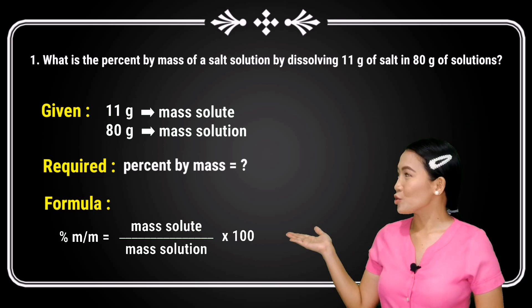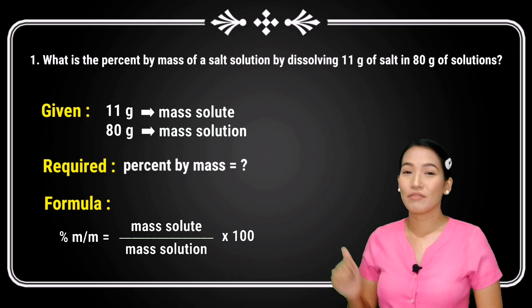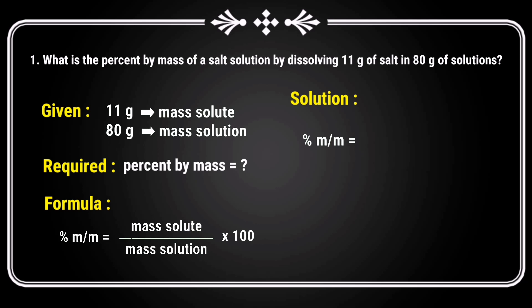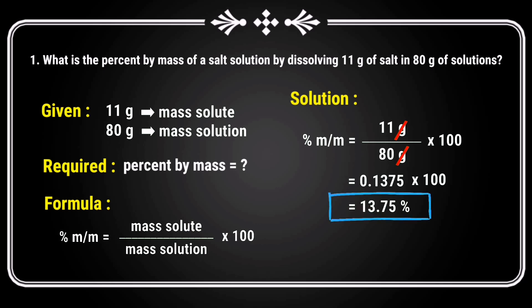Now, we will simply substitute all the values. Percent by mass equals 11 grams divided by 80 grams times 100. Cancel the units so we have 0.1375. But we still have to multiply this to 100. Therefore, the answer is 13.75%.